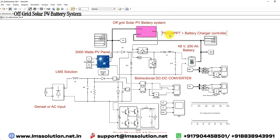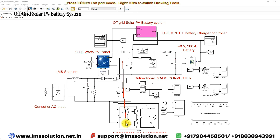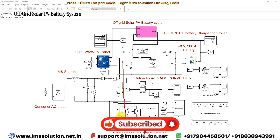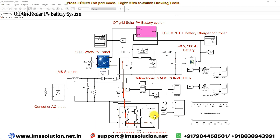We are using PSO MPPT plus battery charger controller. The solar PV output will be connected to the single-phase DC-AC conversion element. The output of the solar PV is directly fed to the AC load or home load, and the solar PV output will also be directly connected to the battery via a bi-directional converter.